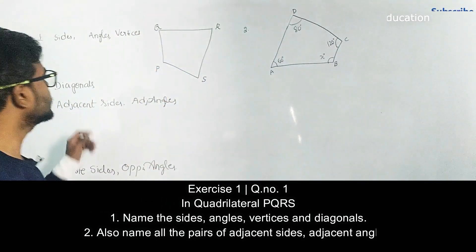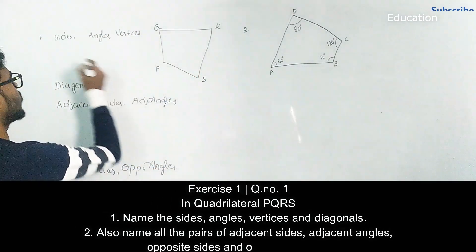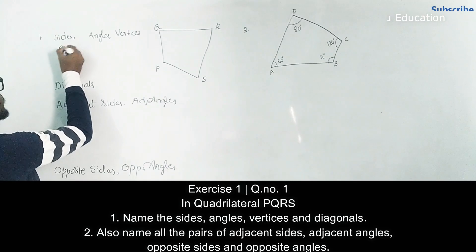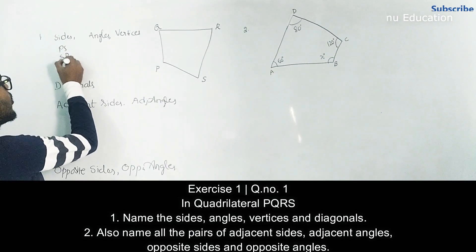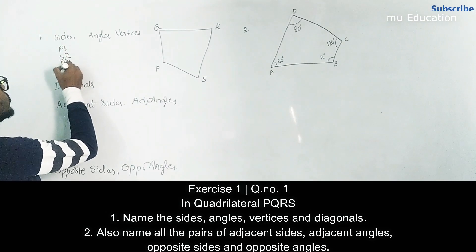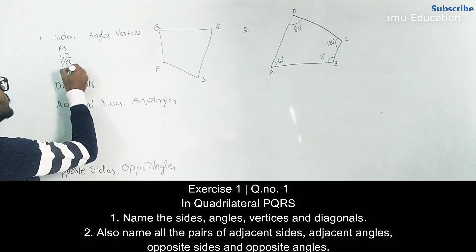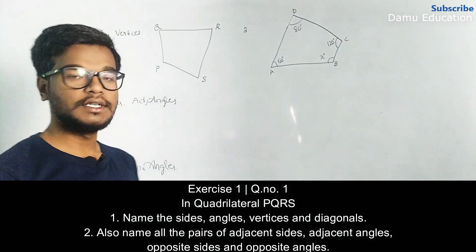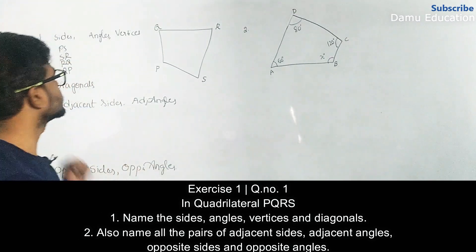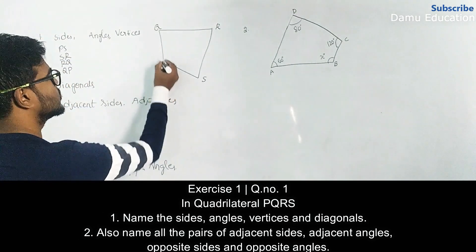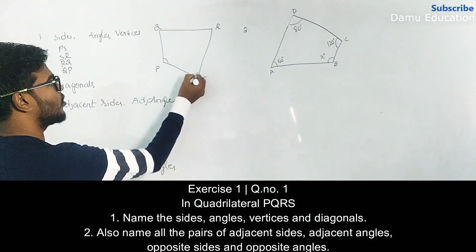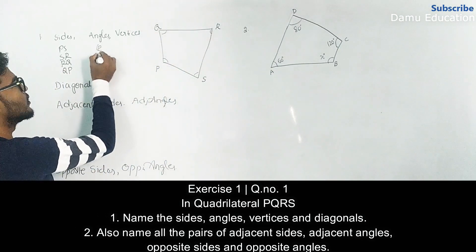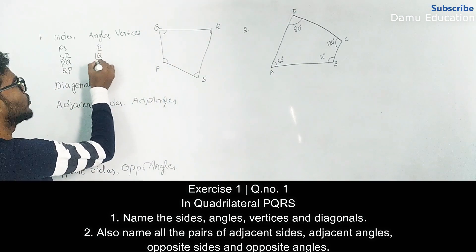The sides of the quadrilateral are PS, SR, RQ, and QP. These are all the sides. Next, the angles — these are all the angles: angle P, angle Q, angle R, and angle S.